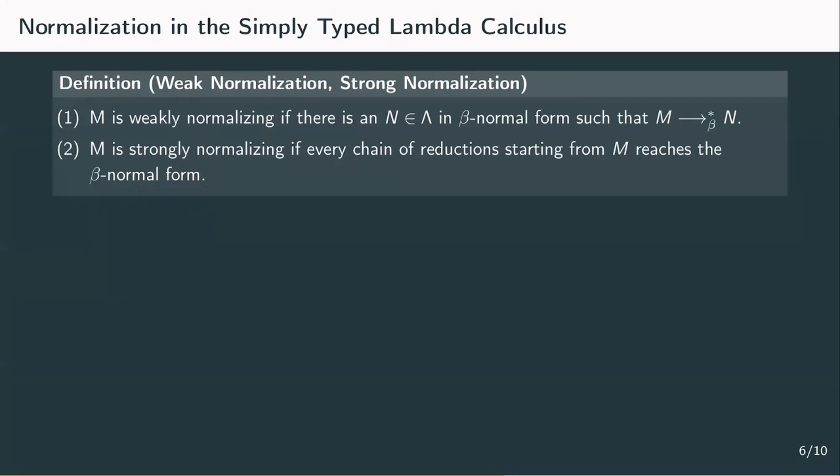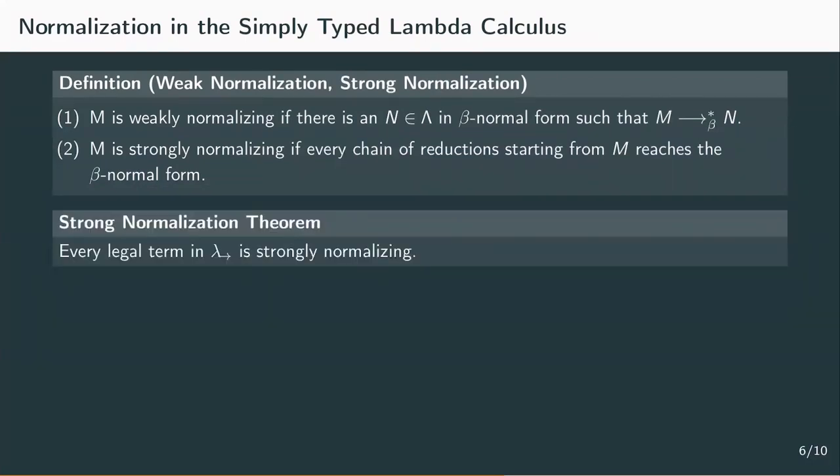In the simply-typed lambda calculus, every typable term is strongly normalizing. This property is a result of our quite restrictive type system, which by design only allows terms that are strongly normalizing.